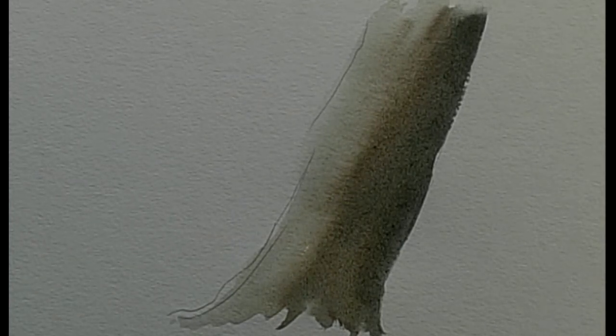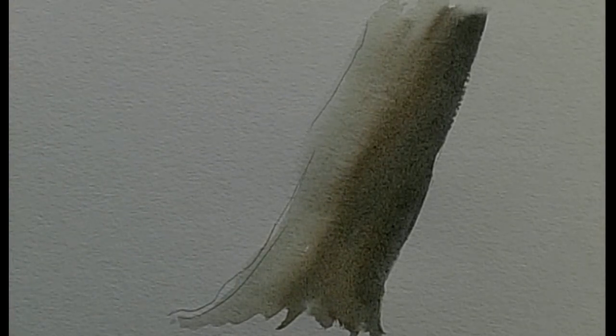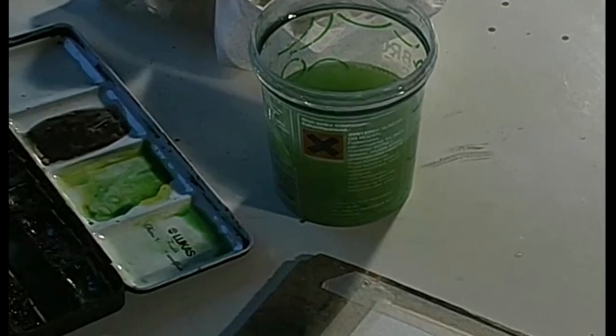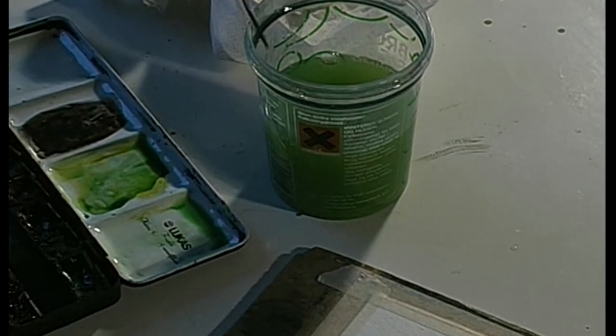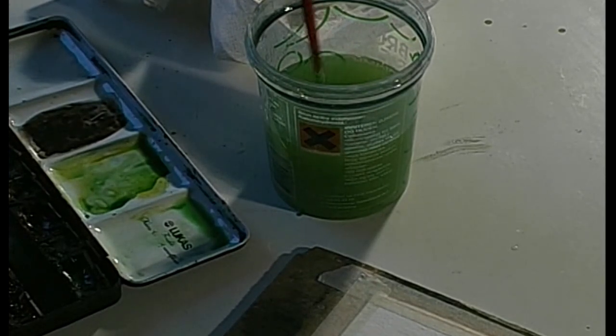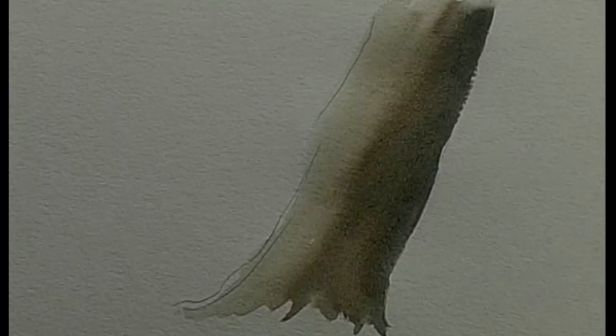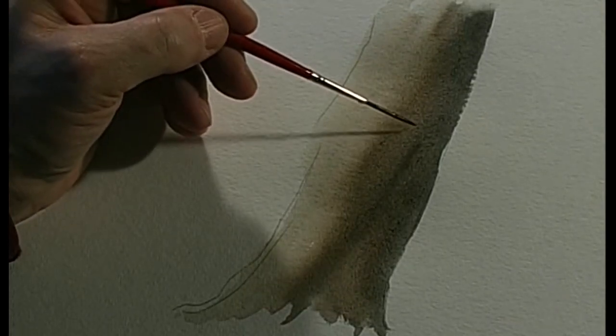I start with a drawing of a tree trunk and I wet it slightly with water, and then I paint a darker color on the side of the tree trunk which should be in shadow, and then I pull the color over to the light side of the tree so I get a round tree.